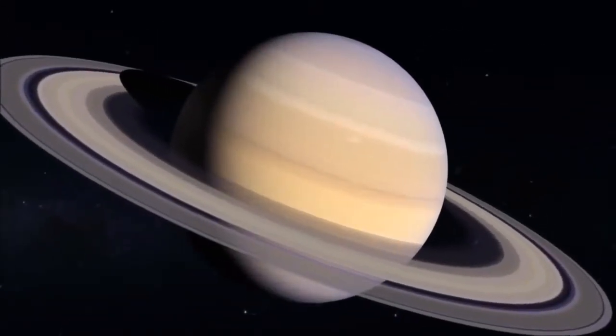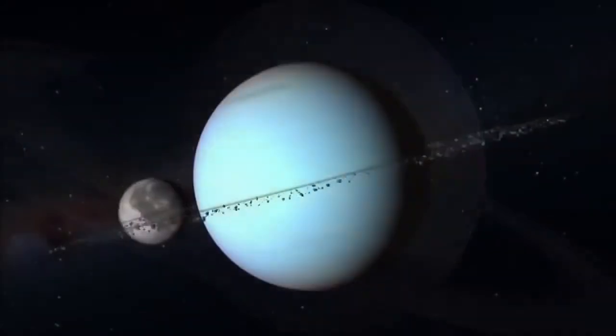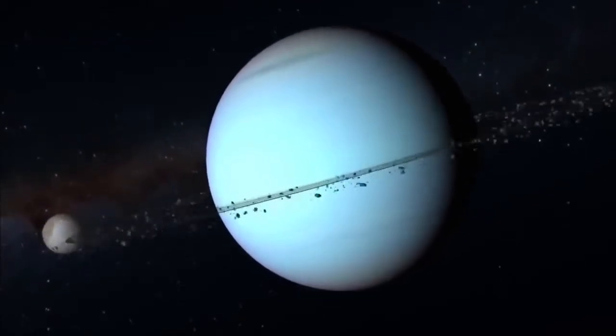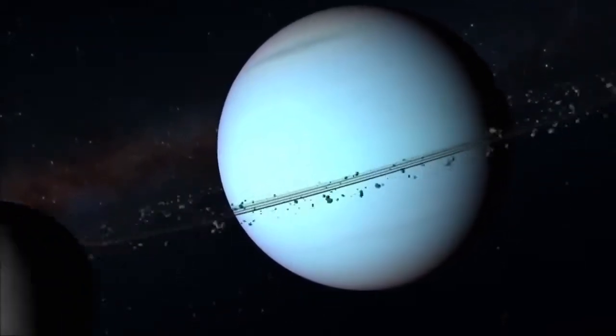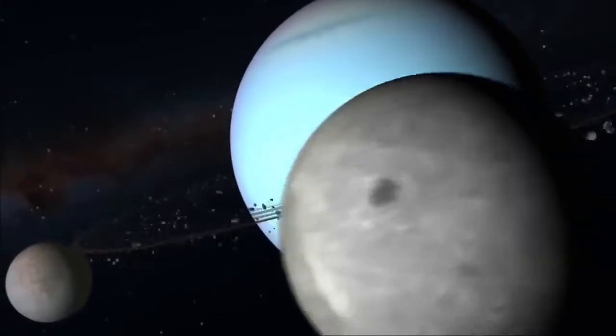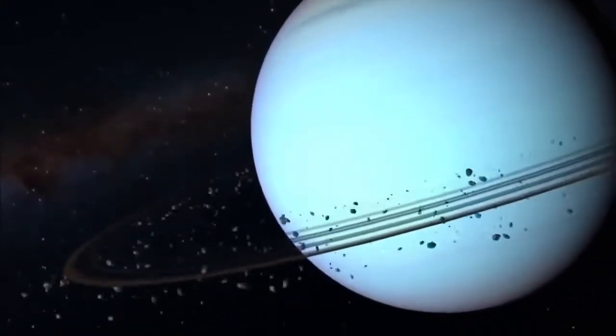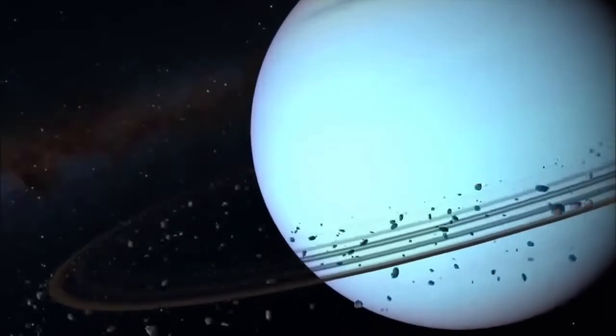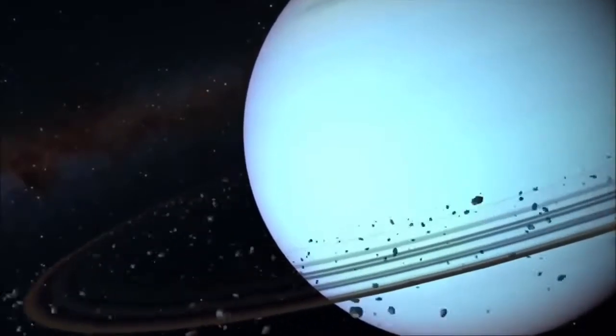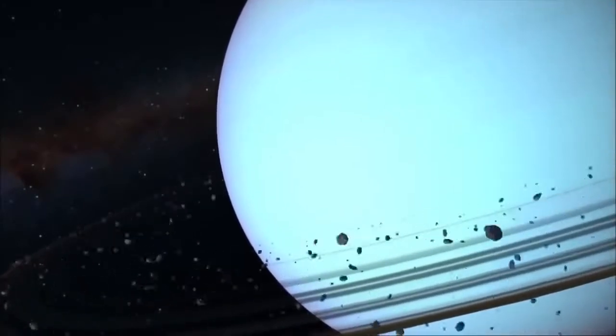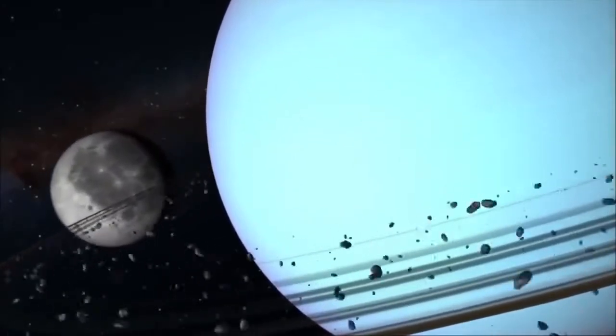Unlike Saturn's thick, icy rings, Uranus's are dim and thin, comprised of dark rocky dust. Some of Uranus's dusty rings were likely formed by the impact of a meteor or a comet with one of the planet's 27 moons. The inner rings could be the result of collisions between the moons themselves, especially the 13 that orbit in the planet's kinetic inner swarm.